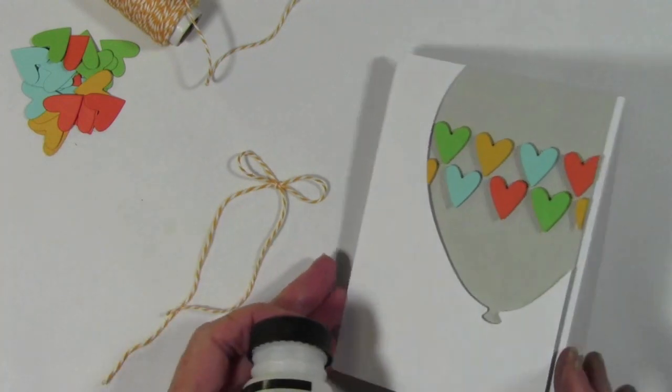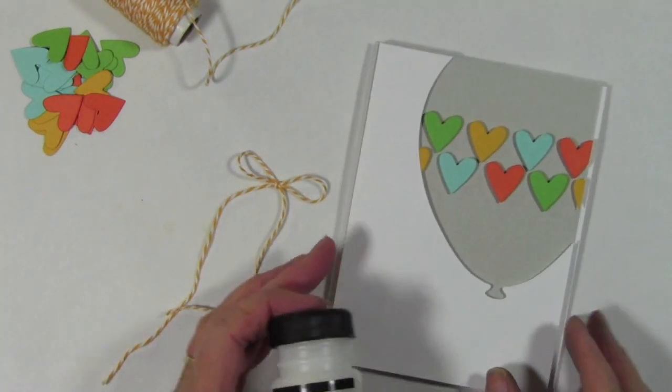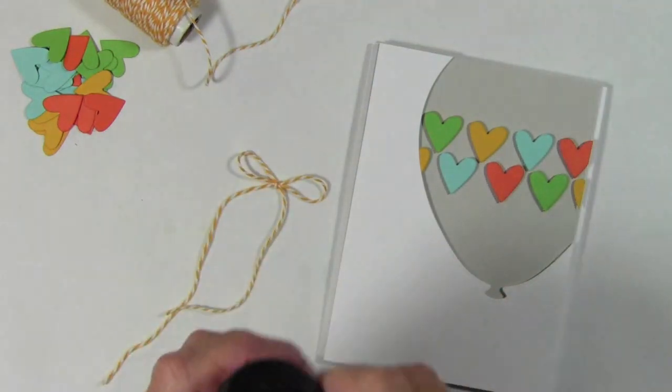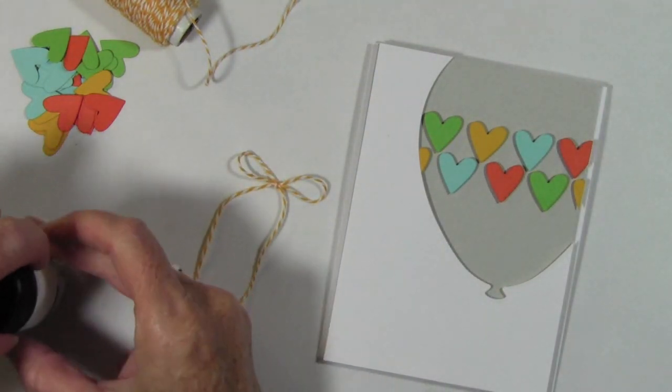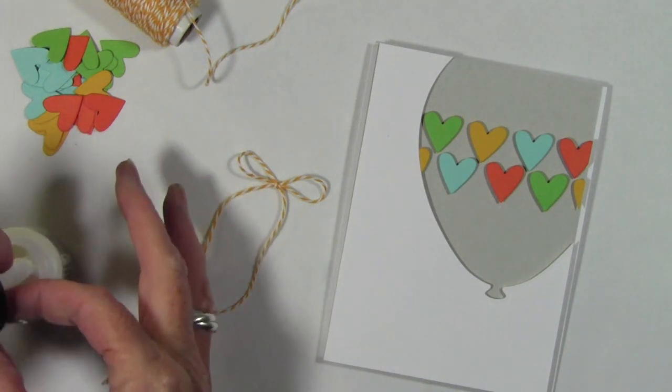I've used some foam adhesive on that white Neenah cardstock and I've lifted that up from that Fog panel, and now I'm using my Multi Matte Medium and I'm going to wrap my little bow here that I've tied around a paintbrush.